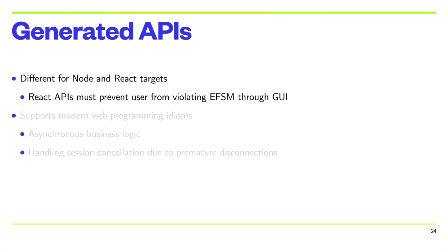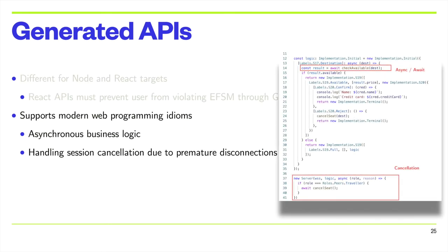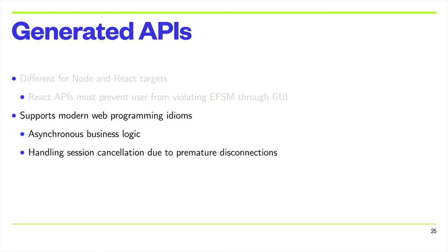The generated APIs and runtime are different for Node and React targets, as each presents a different set of challenges. The implementation for React is particularly challenging because the generated APIs also need to guarantee that the user interactions respect the semantics of the EFSM. The generated APIs for both targets support modern web development idioms such as promises and async await. The runtime also provides schemes for error handling in the context of web-based systems such as session cancellation caused by premature disconnections. These inclusions maximize the compatibility of SessionTS with modern web programming practices.